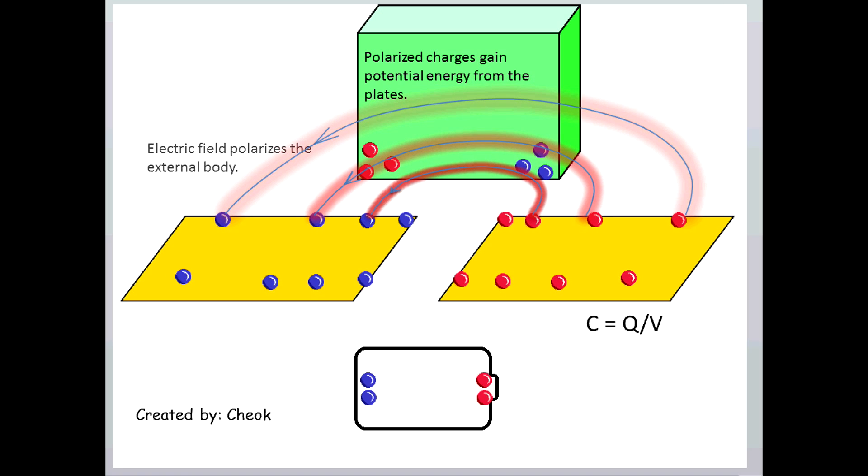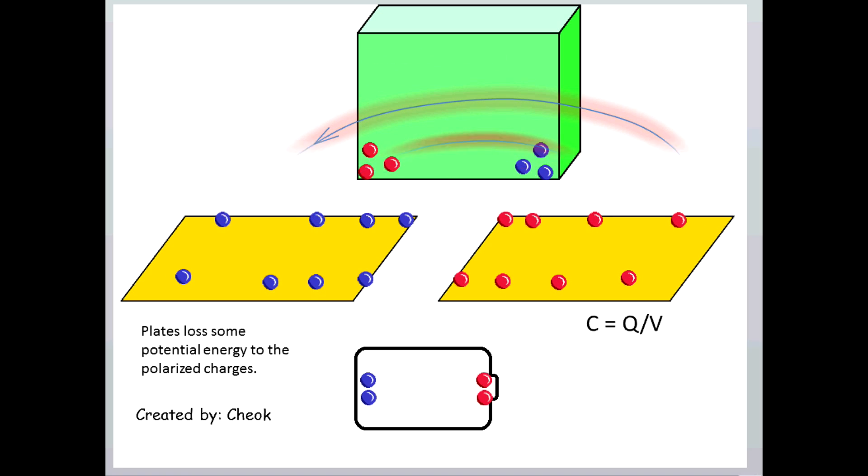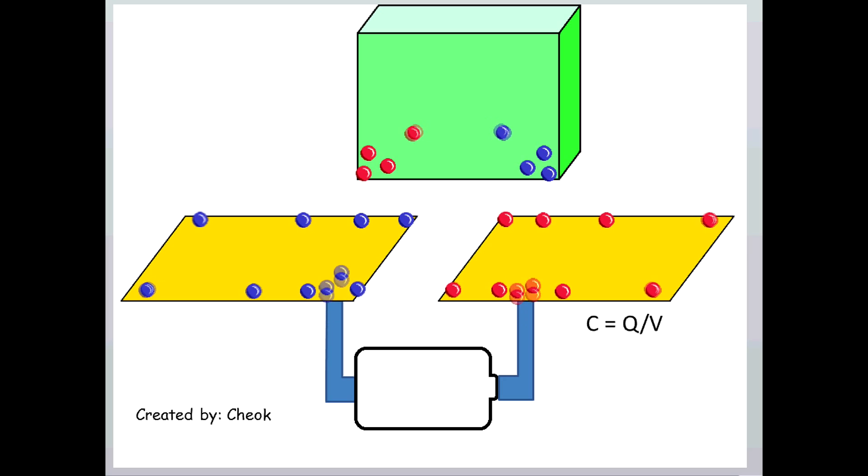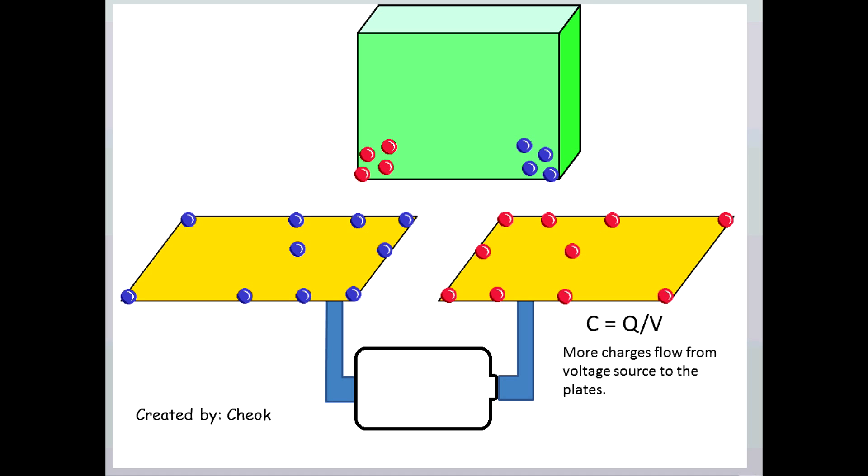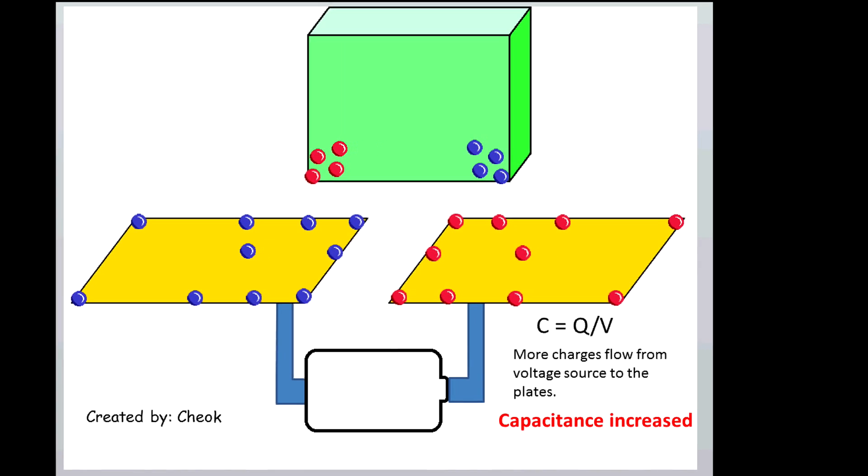The polarized charges get energy from the plates and the plates now have a lower potential. If the source is still connected, more charges will join in the plates until the plates potential is back again. The external object allows more charges to store in the plates and therefore it increases the capacitance.